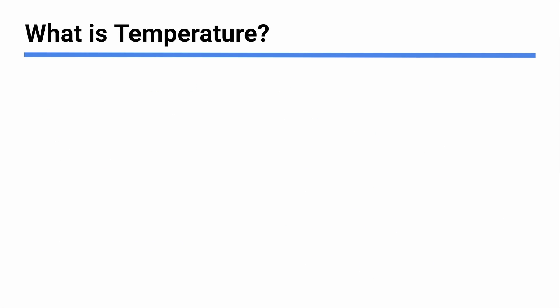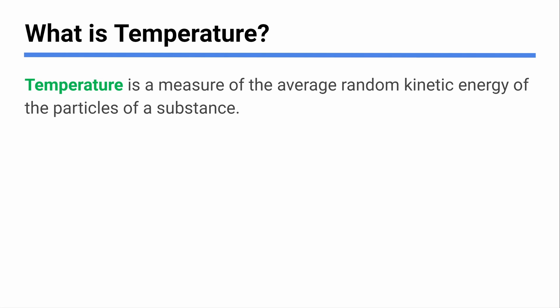So temperature is something we talk about a lot. You have a good sense of the word temperature from everyday life. It is a specific thing when we talk about it in a very science-y, physics-y way. So here's what we're going to say about temperature. Temperature is a measure of the average random kinetic energy of the particles of a substance. So temperature has to do with, but isn't equal to, kinetic energy. It has to do with how the particles of a substance are moving, often vibrating.